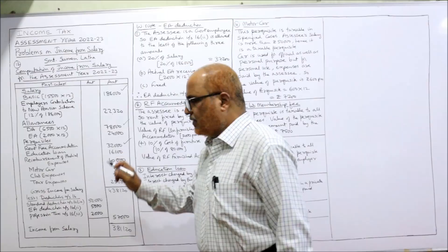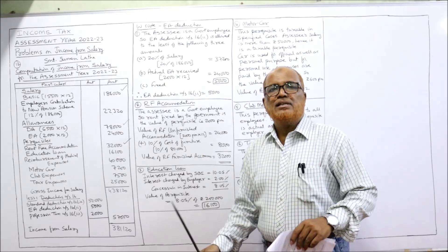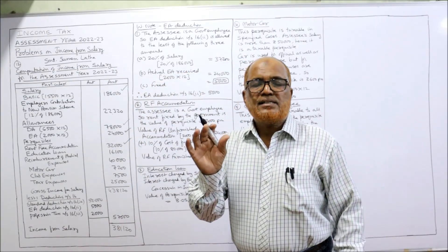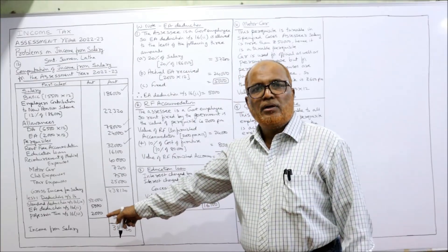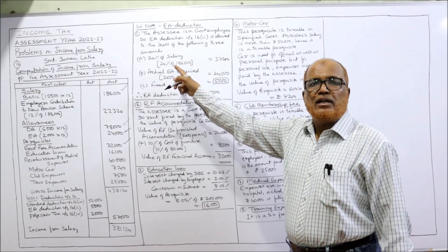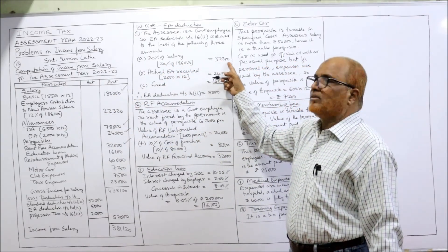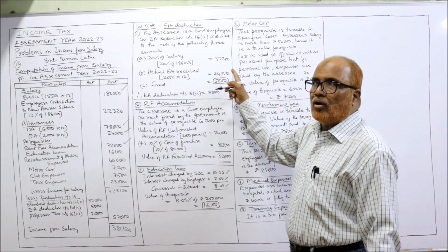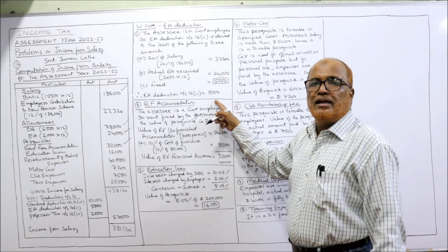Next, entertainment allowance (EA) is ₹2,000 per month, so EA = 2,000 × 12 = ₹24,000. Since the employee is a government employee, EA deduction under Section 16(2) is allowed. In the working note: the deduction is the least of the following three — 20% of salary (20% of ₹1,86,000 = ₹37,200), or actual EA received (₹24,000), or the fixed ceiling of ₹5,000. The least is ₹5,000, so deduction under Section 16(2) is ₹5,000.